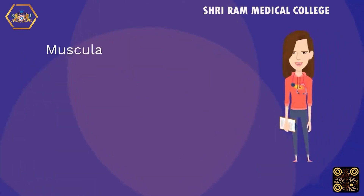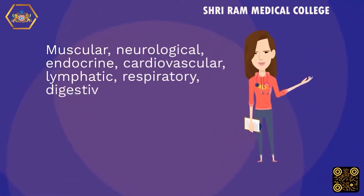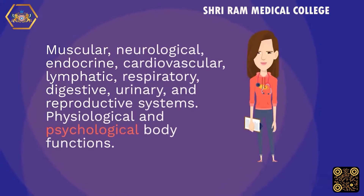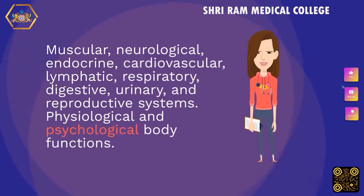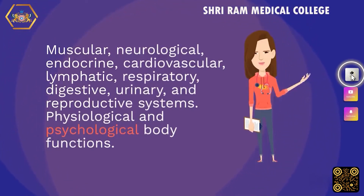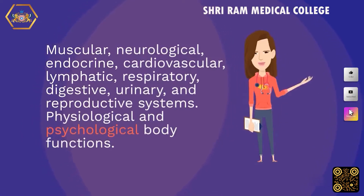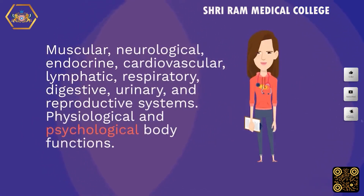The major organ systems include muscular, neurological, endocrine, cardiovascular, lymphatic, respiratory, digestive, urinary, and reproductive systems. The body performs both physiological and psychological functions.